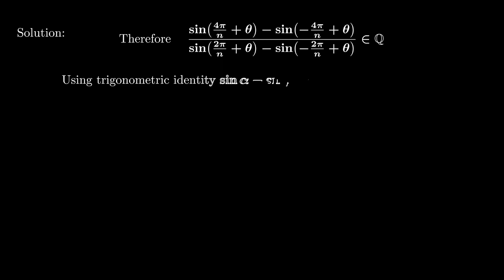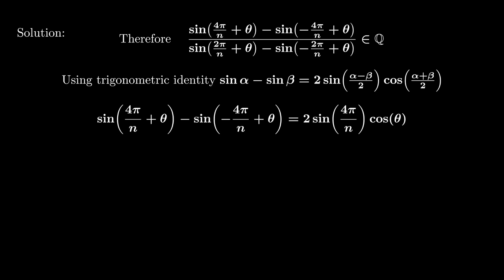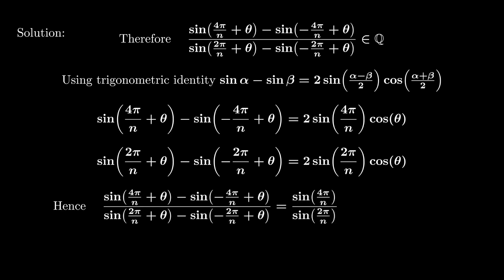Next, we apply the trigonometric identity sin α - sin β = 2 sin((α - β)/2) cos((α + β)/2). Applying it to the numerator gives us 2 sin(4π/n) cos(θ). And applying it to the denominator gives us 2 sin(2π/n) cos(θ). Therefore, taking the ratio also removes the dependency on θ. And what remains is sin(4π/n) / sin(2π/n). And this is just 2 cos(2π/n).